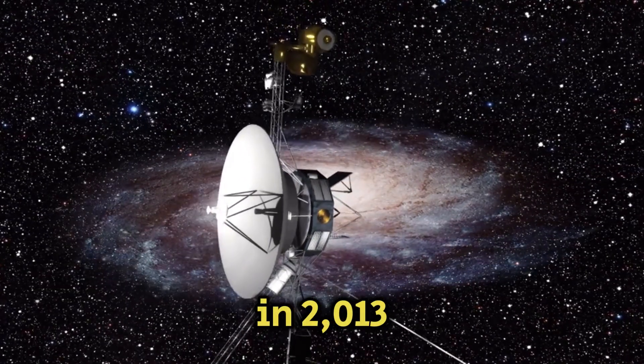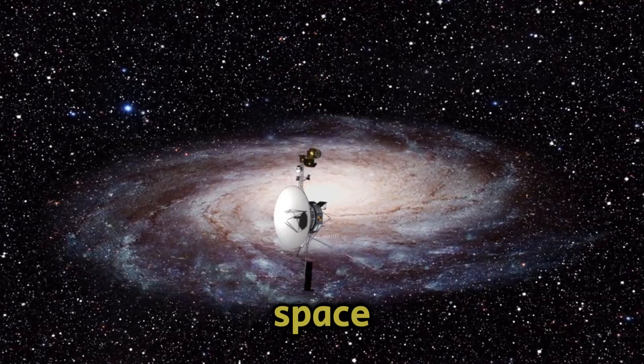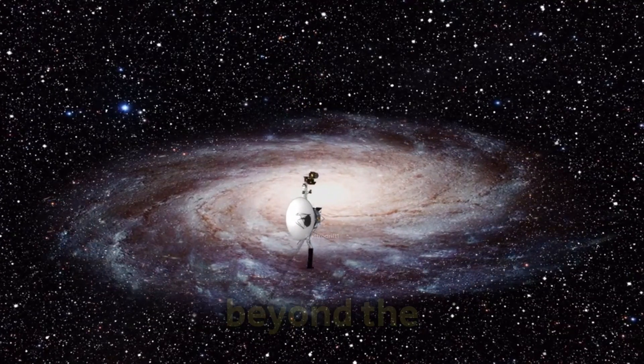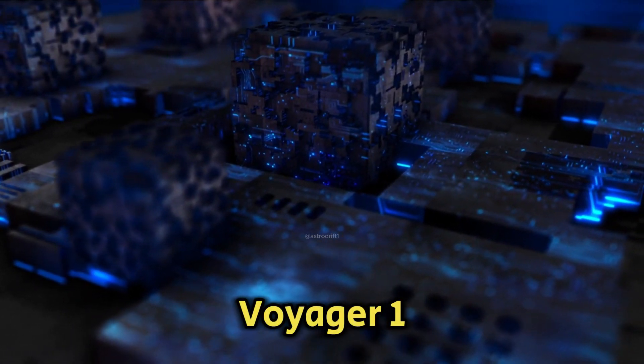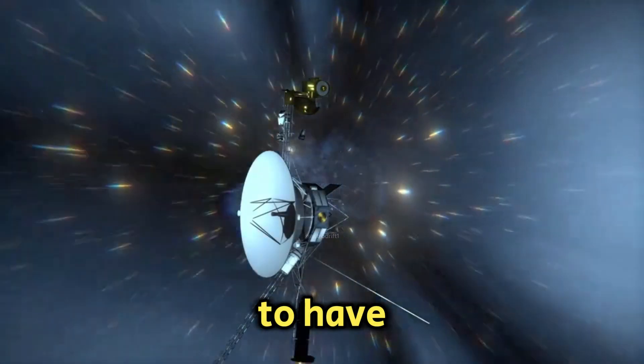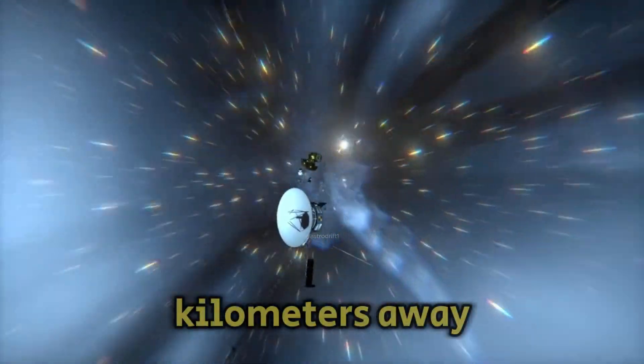In 2013, NASA announced that Voyager 1 had officially entered interstellar space, the region between stars, beyond the influence of the Sun's particles and magnetic fields. Voyager 1 and 2 are the only spacecraft to have ventured into this distant realm, now 17.7 billion kilometers away from the Sun.